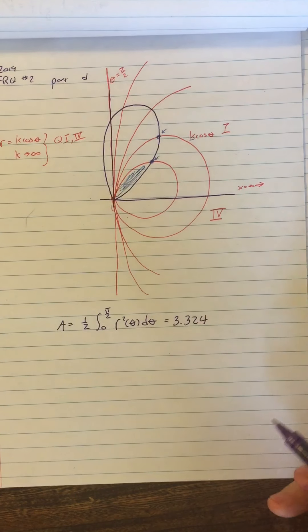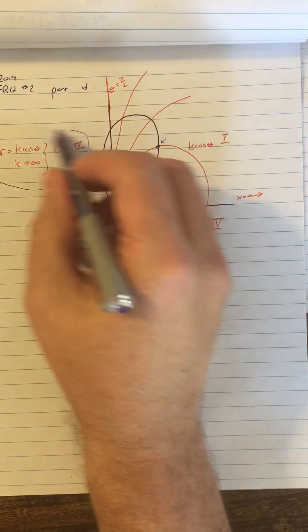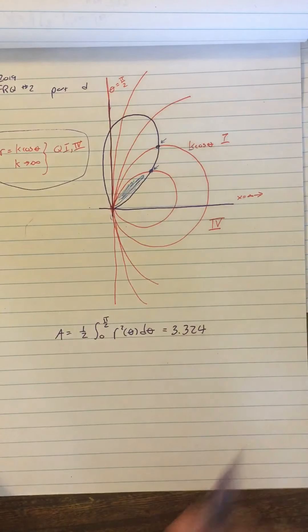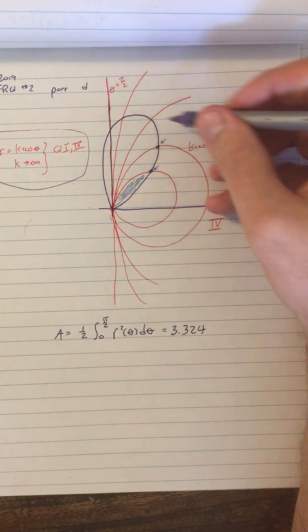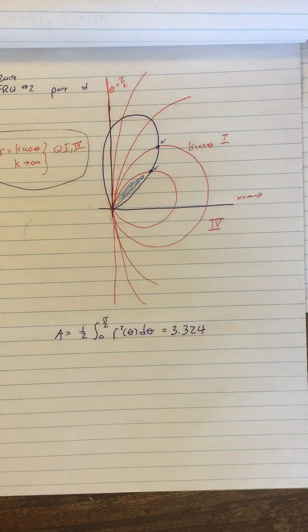So the trick to this whole one was to graphically understand what this meant. That was the trick to it, and not get hung up on trying to do this integral with any particular values of k.